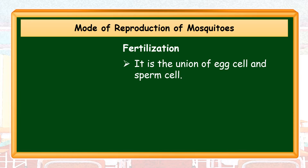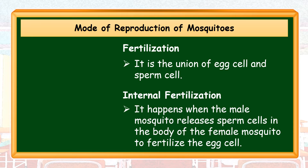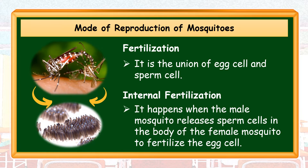Fertilization is the union of egg cell and sperm cell. For the case of mosquitoes, internal fertilization takes place. It happens when the male mosquito releases sperm cells in the body of the female mosquito to fertilize the egg cells. When the egg becomes fertilized, the mother mosquito will lay its eggs on the inner wet walls of containers with water. They only need a small amount of water. A female mosquito can generally lay 100 eggs at a time. This egg will develop until it reaches its next stage.